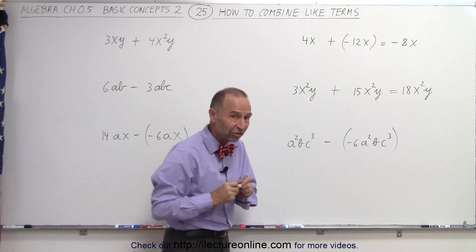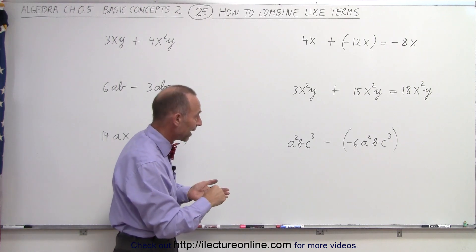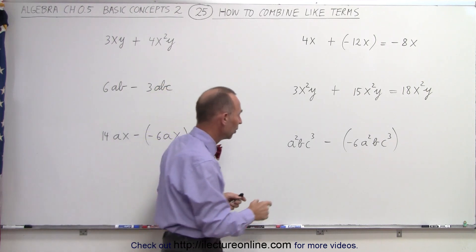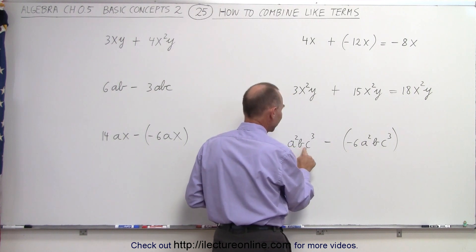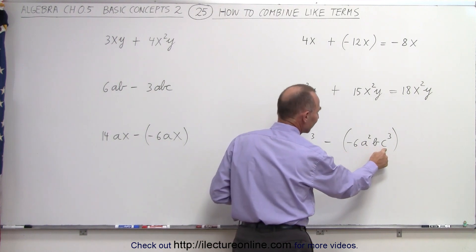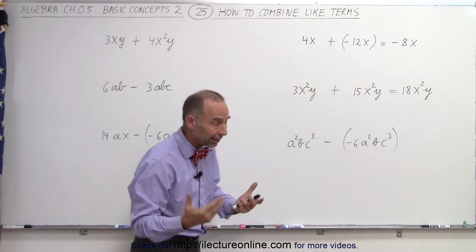Over here, always check to make sure before we add or subtract that these are like terms. Here we have a²bc³, a²bc³—they are indeed alike, like terms, because they have the same letter portions.